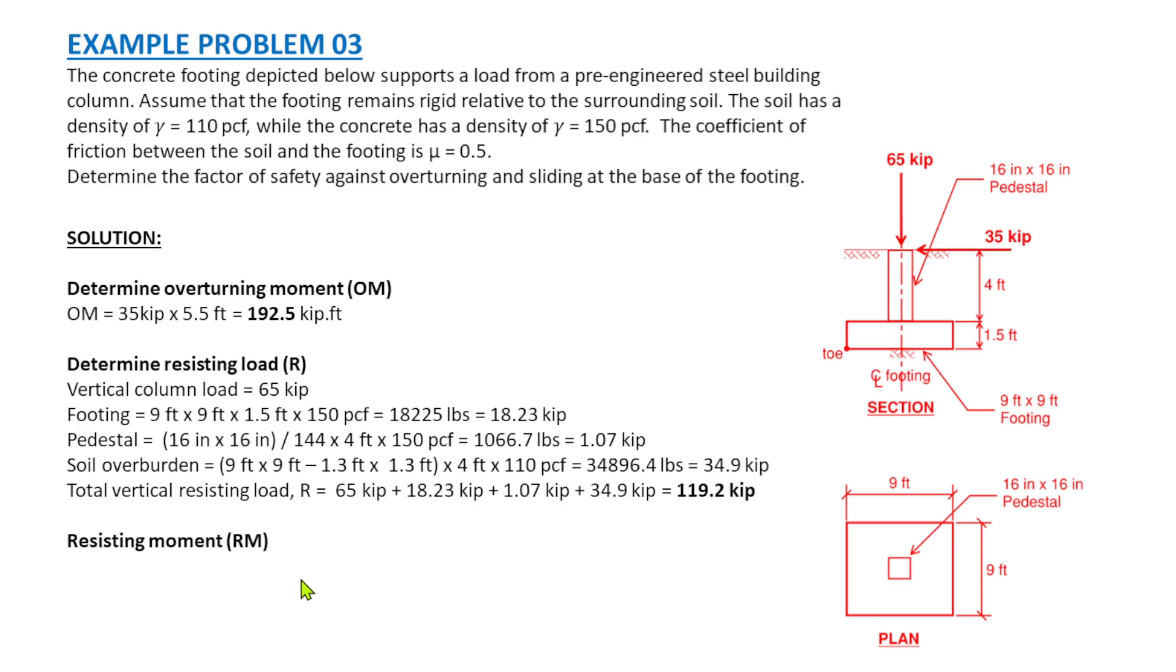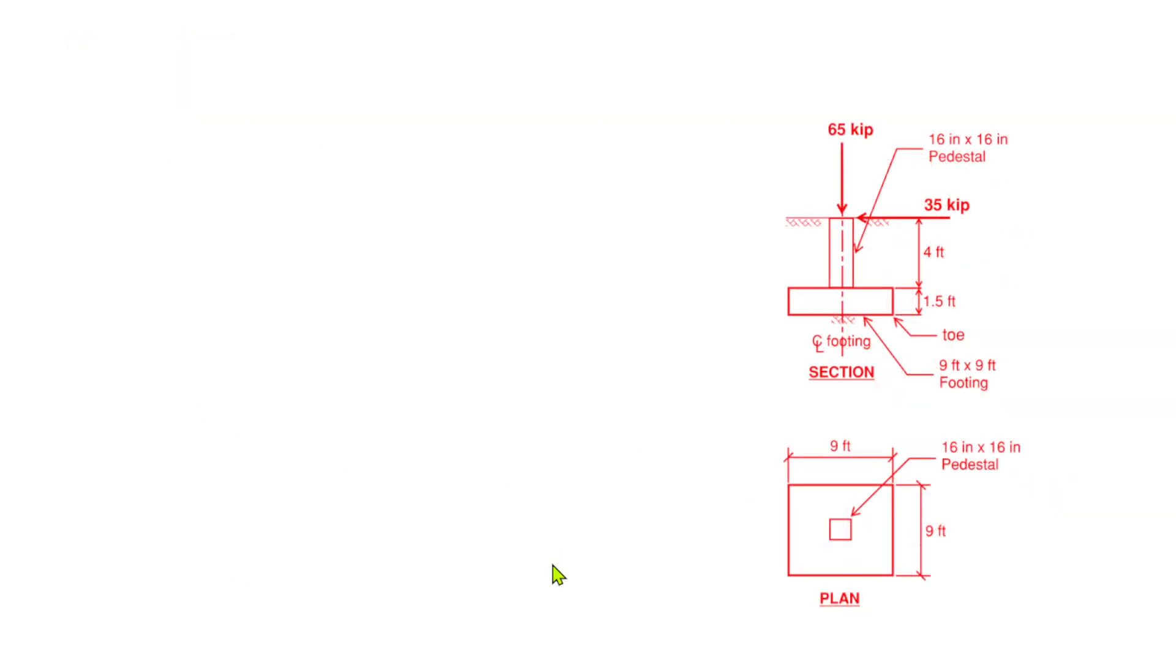The next one is to determine the resisting moment. The resisting moment is the resisting load times the lever arm. So what is our total resisting load? That is 119.2 times 9 feet over 2, because the centerline of footing to the pivot is 4.5, half of the length of the footing. So we have 536.4 kip-feet.